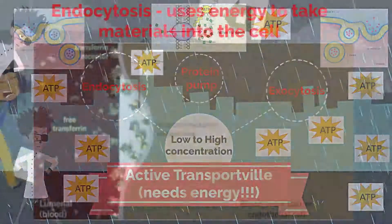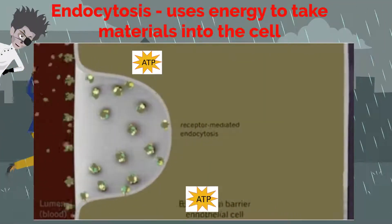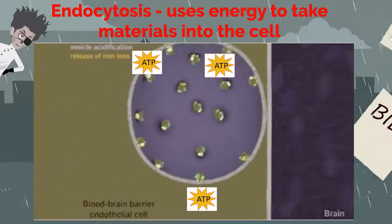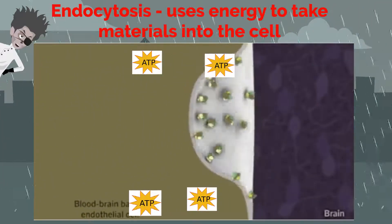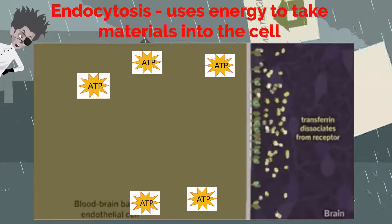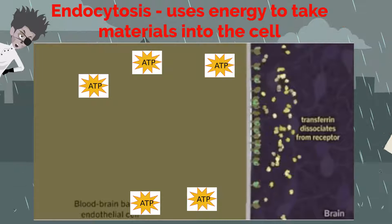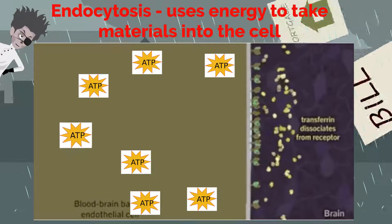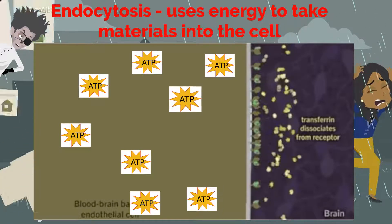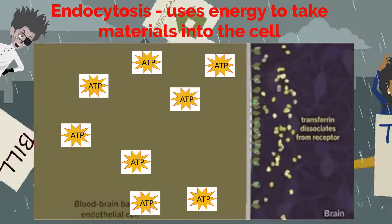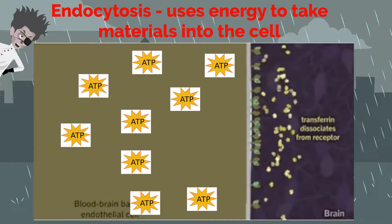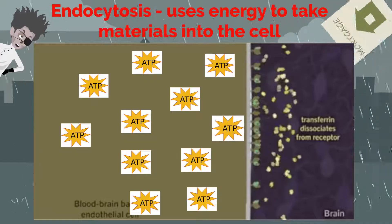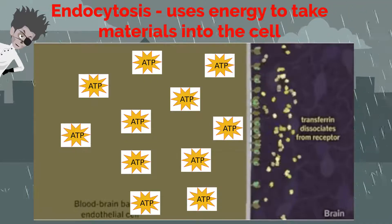In endocytosis, ATP is used for the cell membrane to fold in and make a pocket around materials it wants to take in. The pocket that is formed around the materials breaks loose from the outer part of the cell membrane and forms a vesicle or vacuole within the cytoplasm. Large molecules, clumps of food, and even whole cells can be taken in in this way.